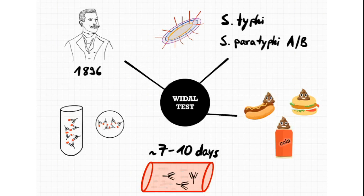During infection, these antigens stimulate the body to produce specific antibodies, which are released into the blood and can be detected in the patient serum after seven to ten days. The diagnostic test is based on a visible agglutination reaction either in a test tube or on a slide between antibodies of patient serum and a killed bacteria suspension of Salmonella carrying specific antigens.